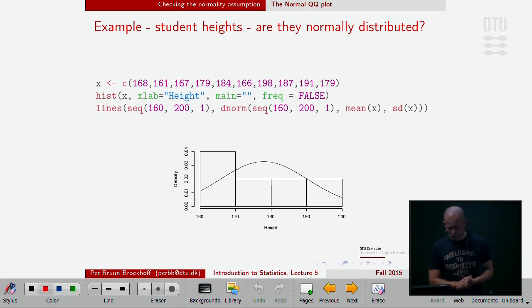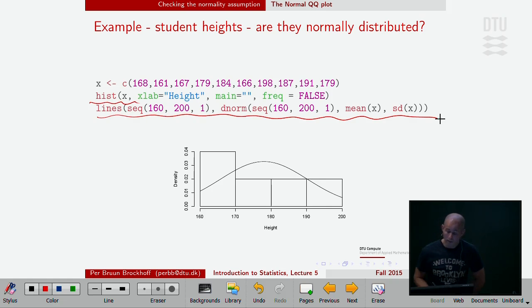Sometimes we might use the normal also for probability calculations, and then it would be nice to check whether it's actually close to being normal. Can we answer the question, are these student heights normally distributed? The first naive thing to do is to make the histogram and compare with the best choice of a normal. I made the histogram and put in the normal distribution with the mean and standard deviation coming from the data.